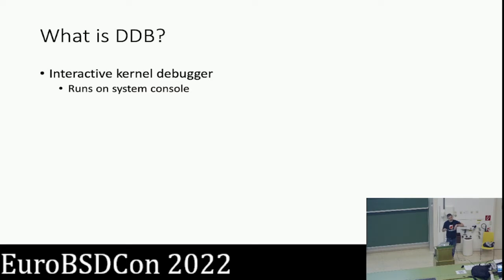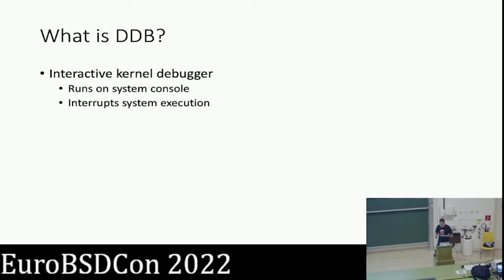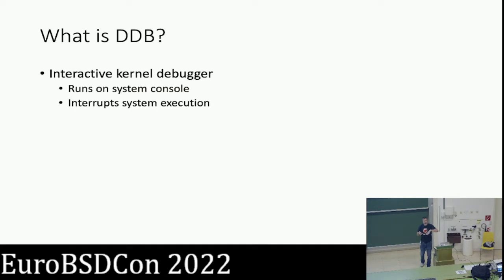It runs on the system console — either a serial or a video console — and you interact with it the way you would interact with GDB inside a terminal. When DDB is active, it interrupts system execution. Unlike the kernel variant of GDB where you can analyze the system while it stays running, DDB always pauses system execution and freezes all CPUs, kind of like when you attach GDB to a userland process. In that sense it is somewhat invasive because you have to pause the system while you're messing with it.